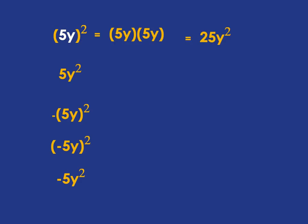In the next one, the only thing being squared is the y. So what we have is 5 multiplied by y multiplied by y, and that just gives us 5y squared.